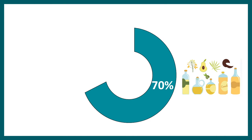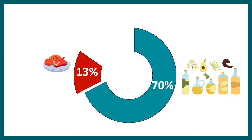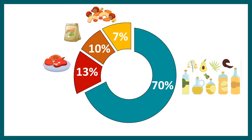Now let's talk about the sources of omega-6 fatty acids. About 70% are obtained from vegetable oils such as sunflower oil, canola oil, avocado oil, and coconut oil. About 13% come from animal sources like fish and chicken. About 10% come from trail mix and seeds, and about 7% come from dry fruits and nuts.